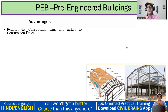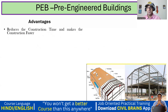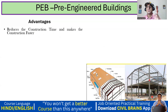The first reason why we go for PEB structures is that it reduces construction time and makes construction faster. For example, if I get a project, I can start with foundation work and excavation, while at the same time fabrication work can be done in the factory. So simultaneous works will happen, and as a result construction time is going to reduce.